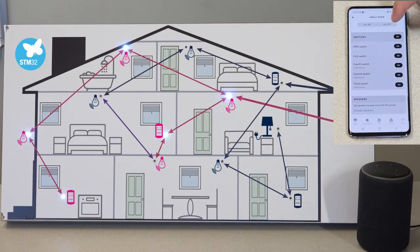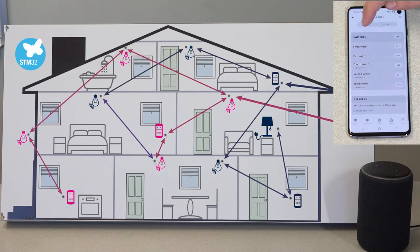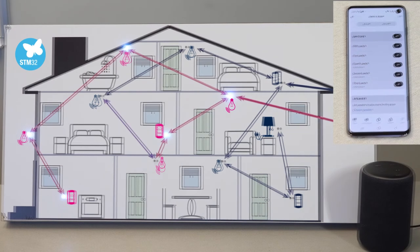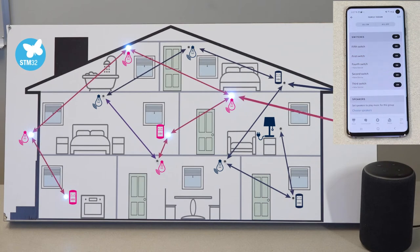If we look at the Alexa app you can see the representation of these active clusters in the form of an on-off button switch and a scroll bar to control the brightness. Alexa, turn family room off. [Alexa]: Okay.